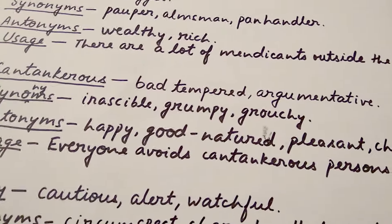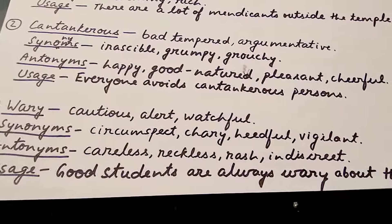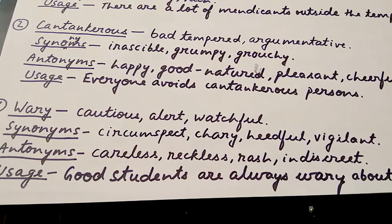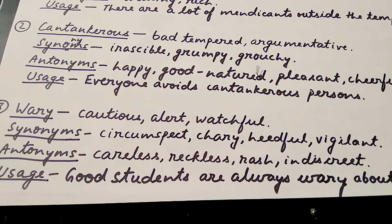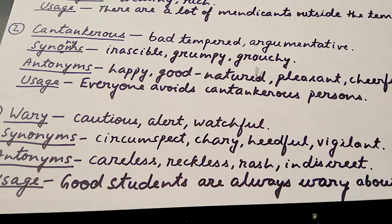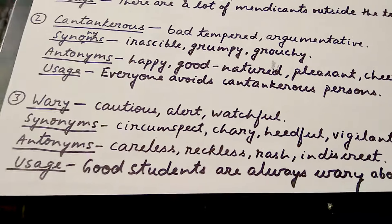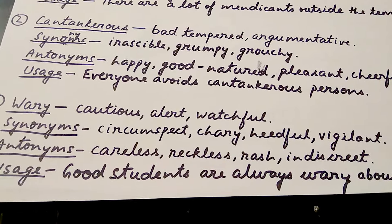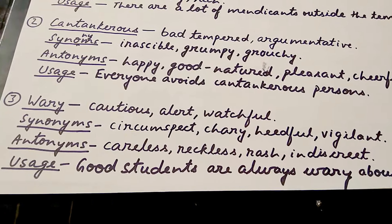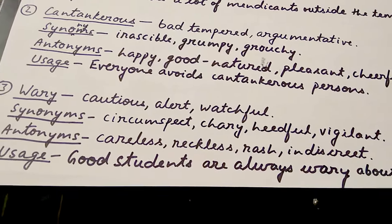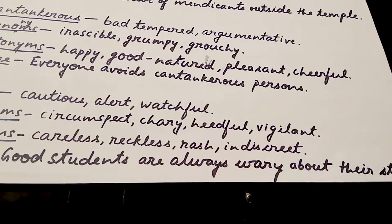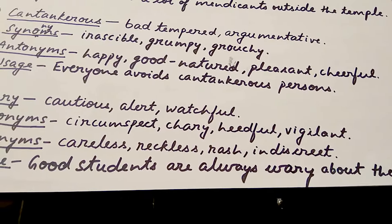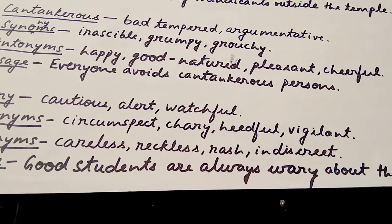The next word is 'wary', which means cautious, alert, or watchful. Its synonyms are 'circumspect', 'careful', 'heedful', and 'vigilant'. Its antonyms are 'careless', 'reckless', 'rash', and 'indiscreet'. Usage in a sentence: 'Good students are always wary about their studies' — students who are good in studies always stay cautious and alert about their studies.